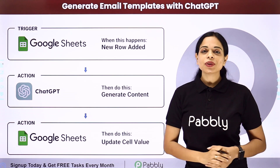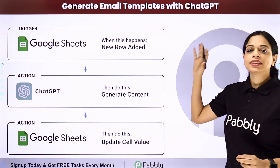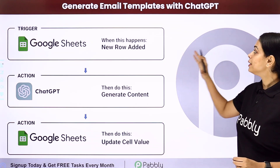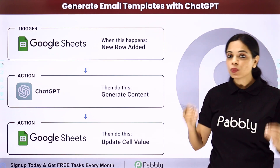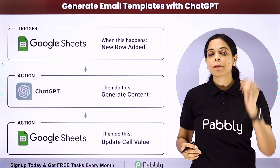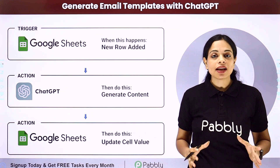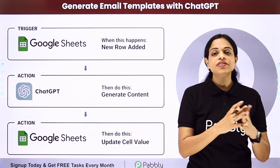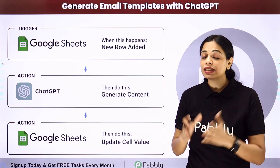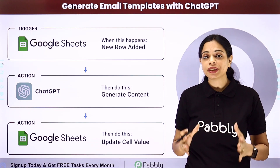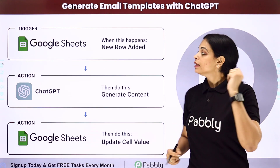In this video we are going to see how to automatically generate email templates with ChatGPT, which is a language model developed by OpenAI. OpenAI is an artificial intelligence and deployment company that helps in generating human-like content.